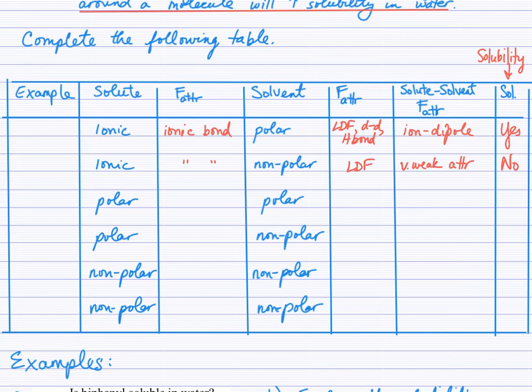Continue through the chart, identifying the force of attraction between solute particles, the force of attraction between solvent particles, then making a decision about the solute-solvent force of attraction. Will that force of attraction be greater than either the solvent or solute forces alone, enough to make these substances soluble? If so, record yes in the last column, otherwise no.